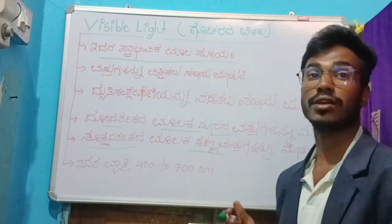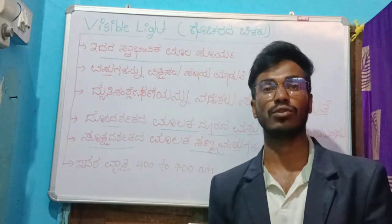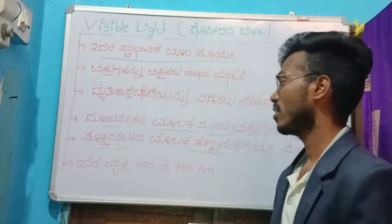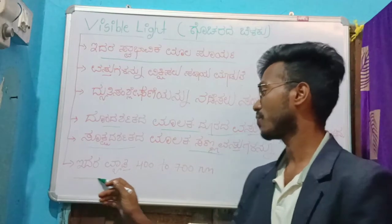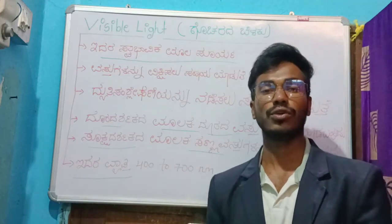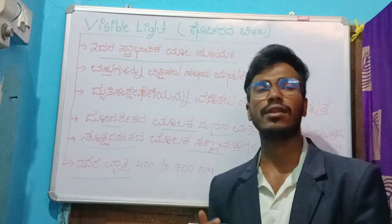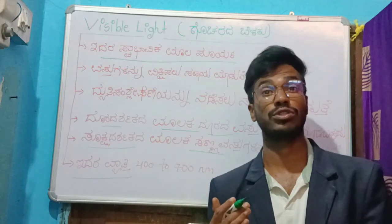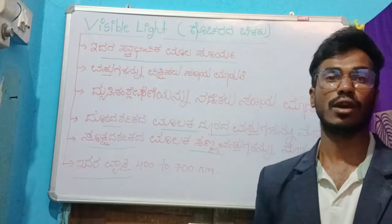This is visible light, which is visible in the eye. The visible light is 400 to 700 nanometers.